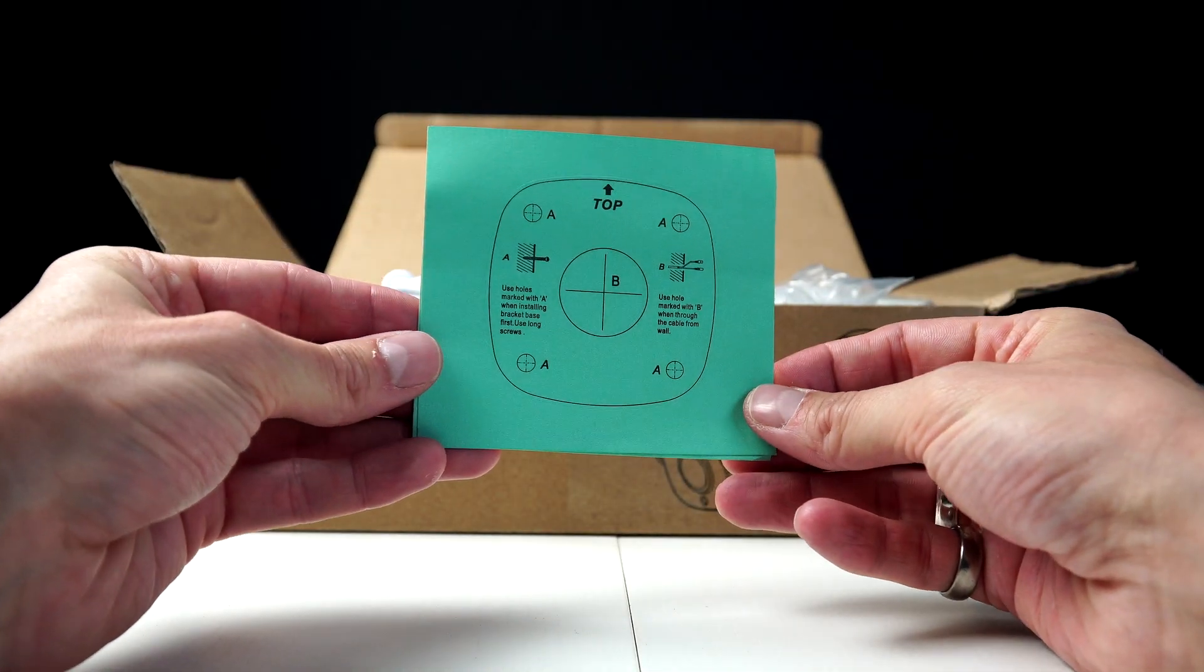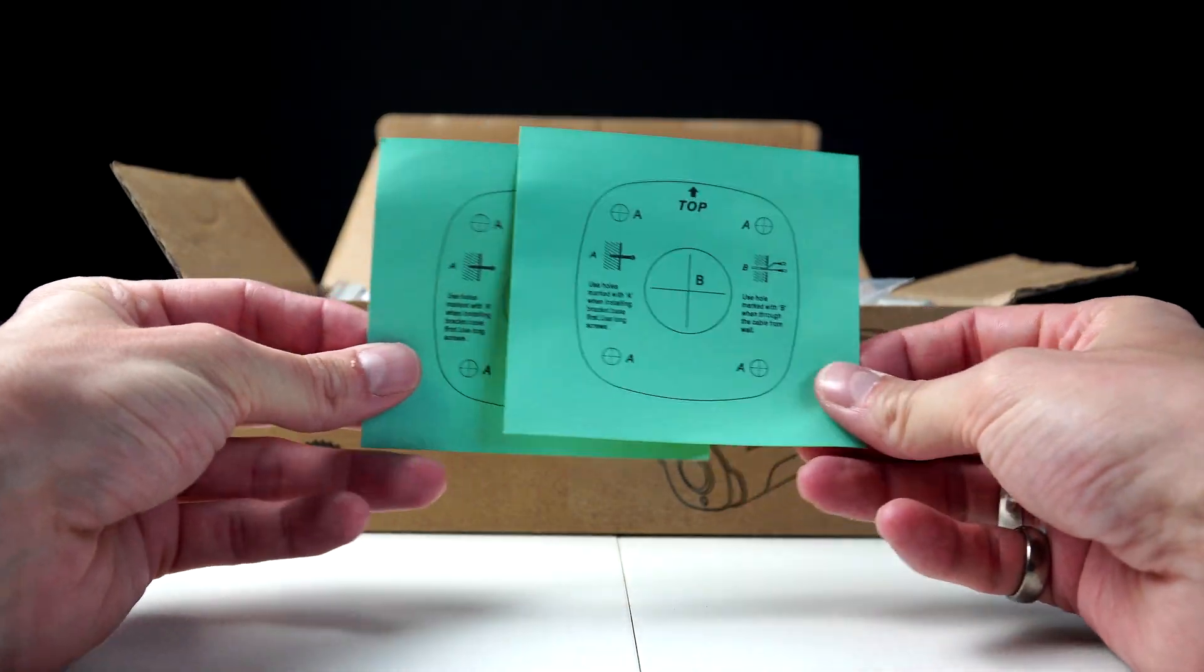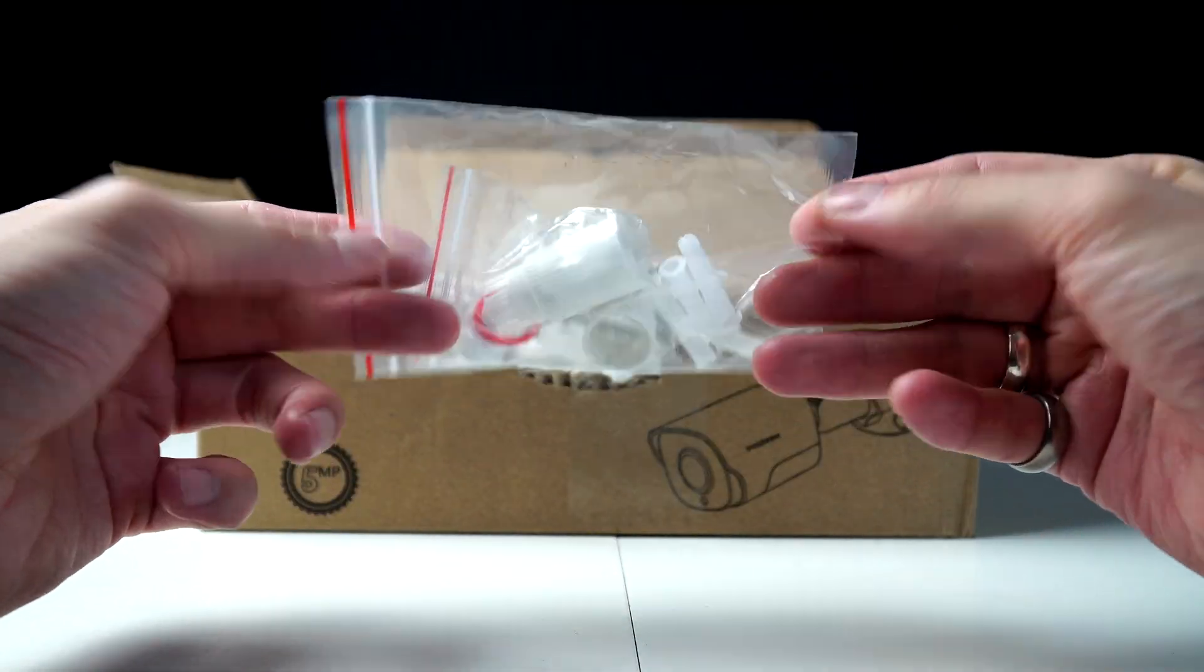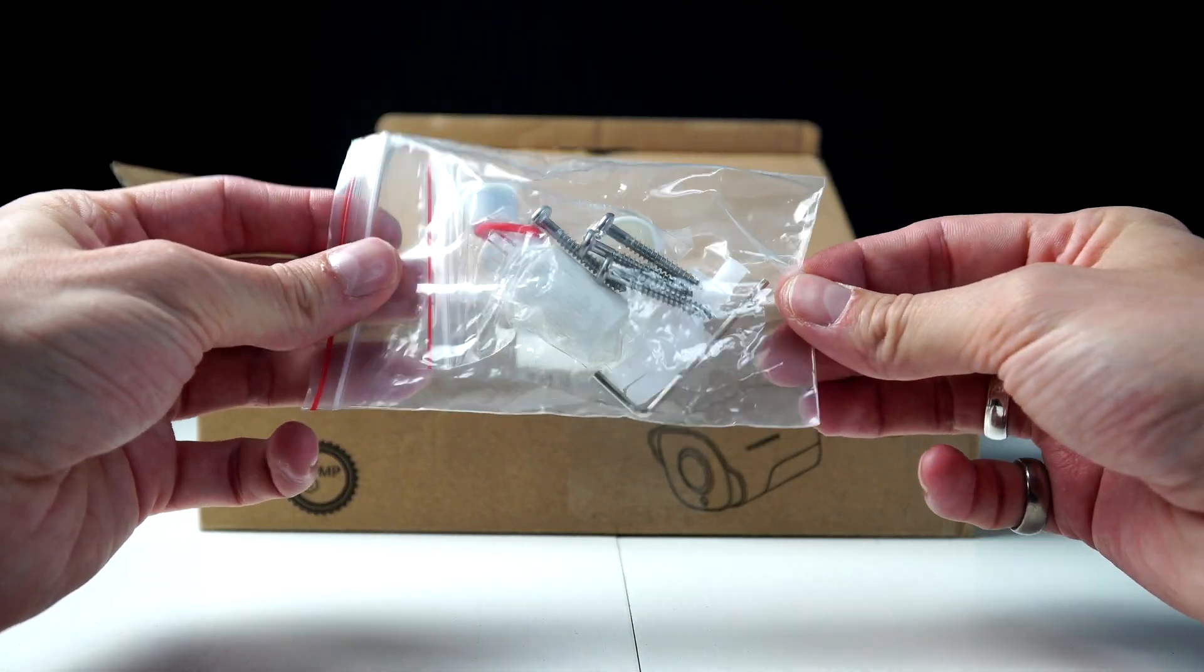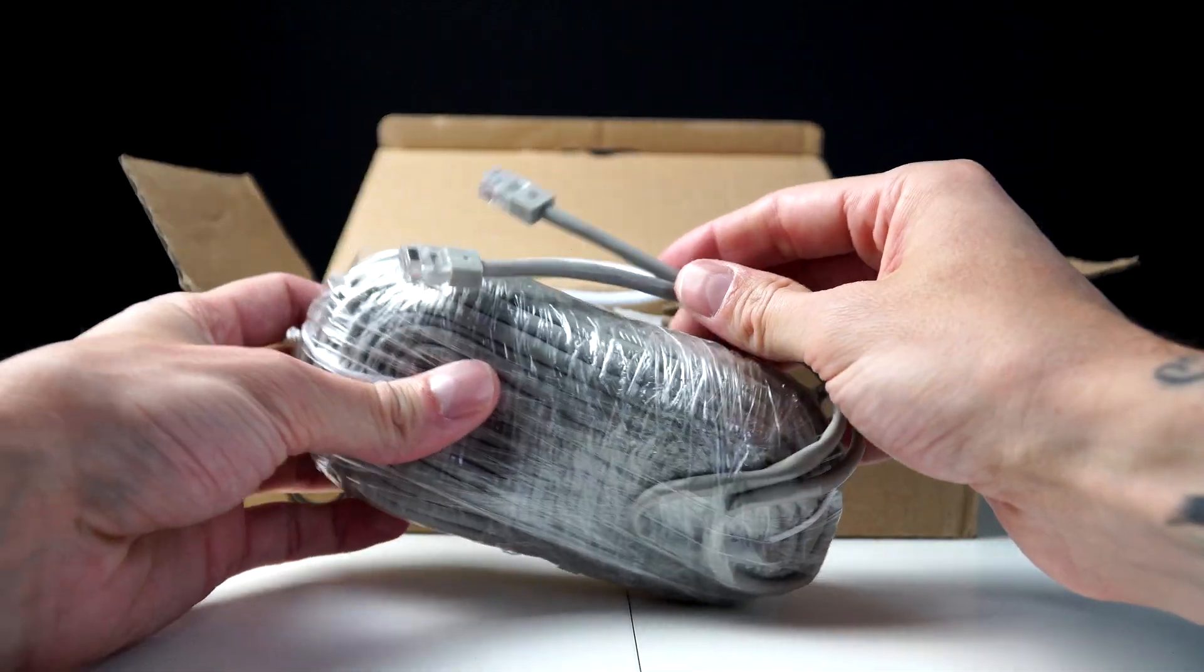First, let's take a look in the box. So we've got instructions, these two templates that will show us where to drill on the wall, which is quite handy. Then we've got wall plugs and screws, waterproof cover to hide the join, and an Allen key to tighten up the camera.